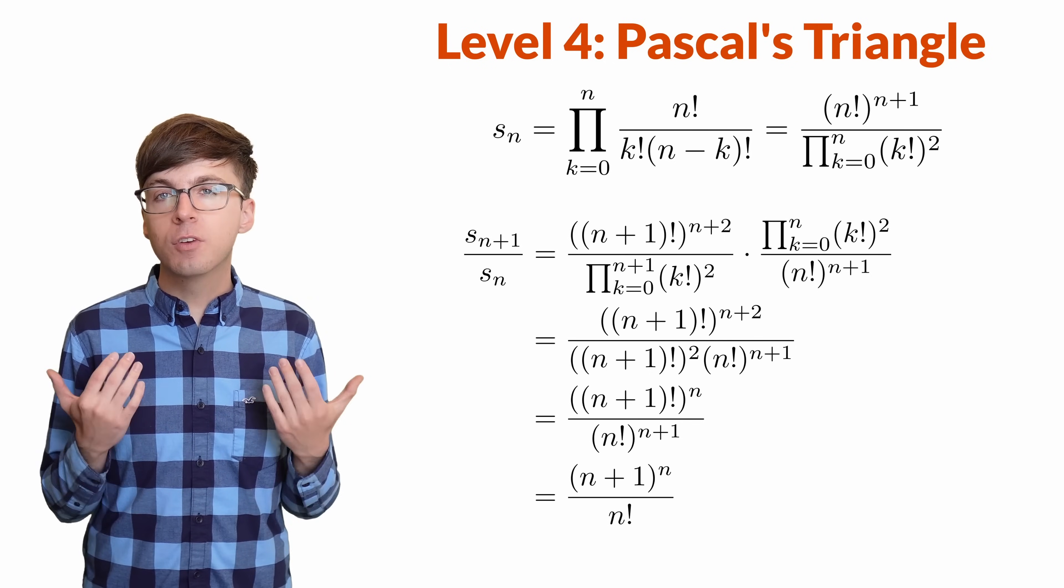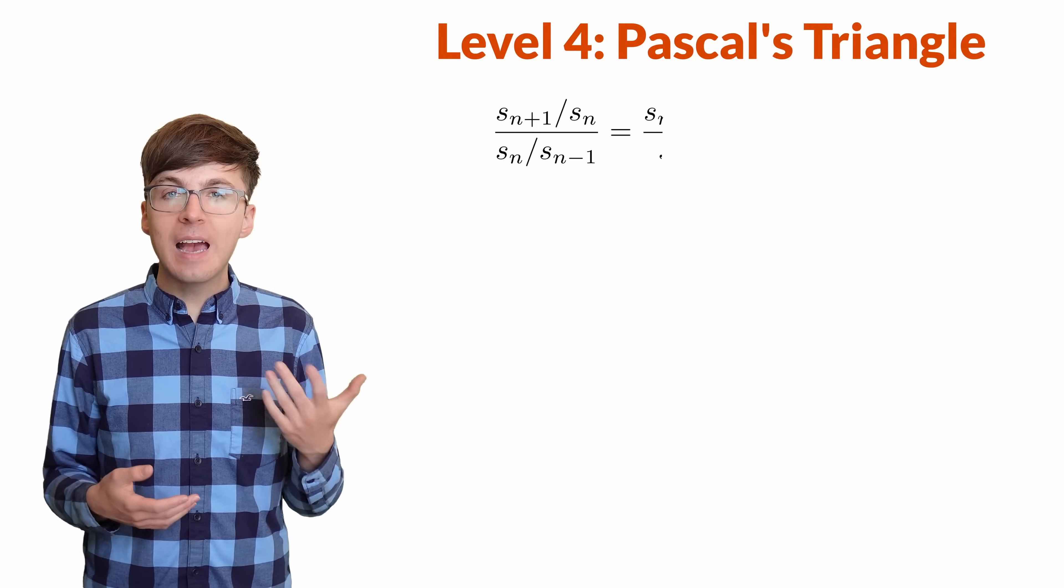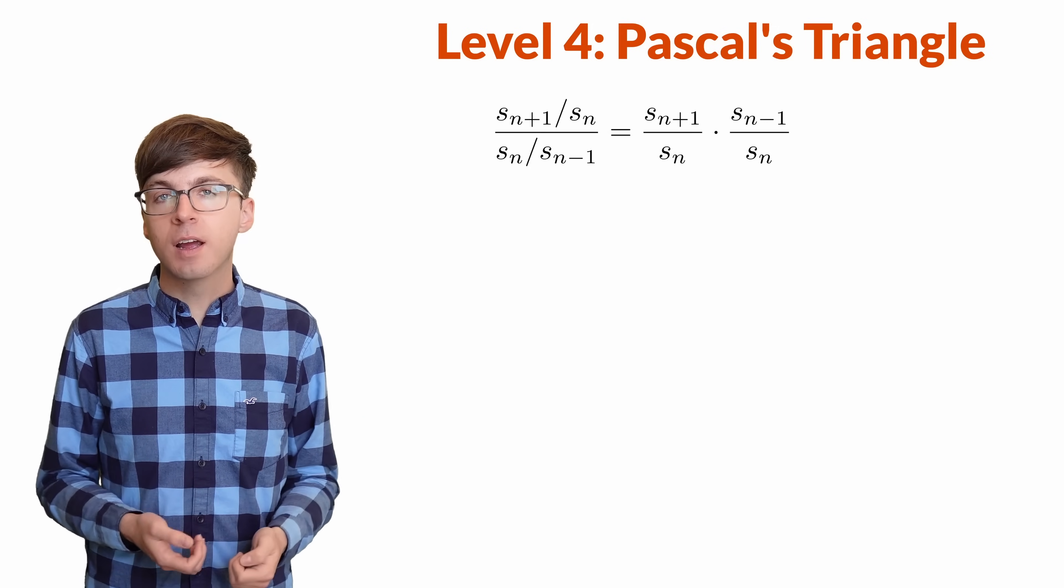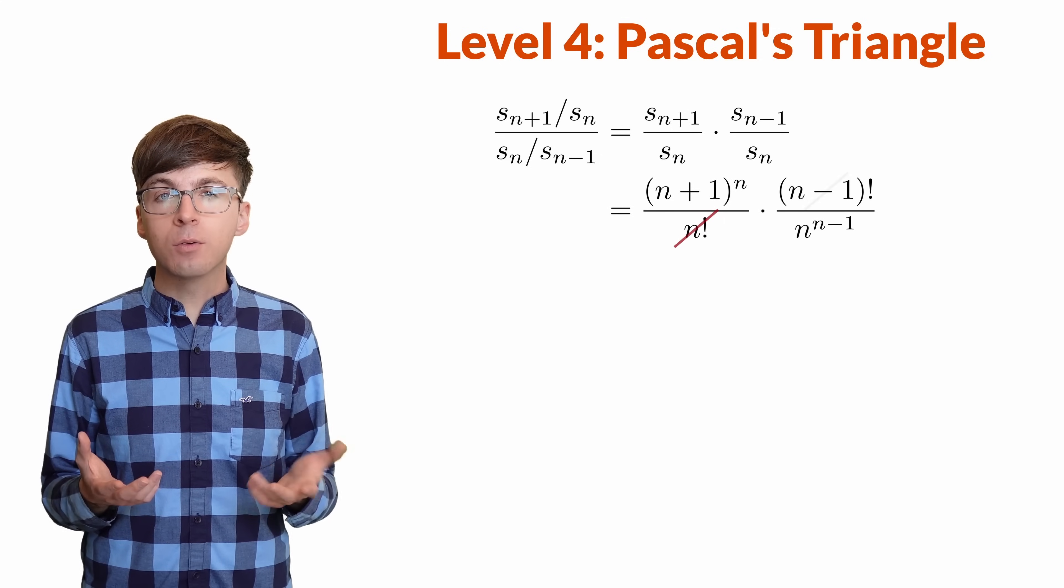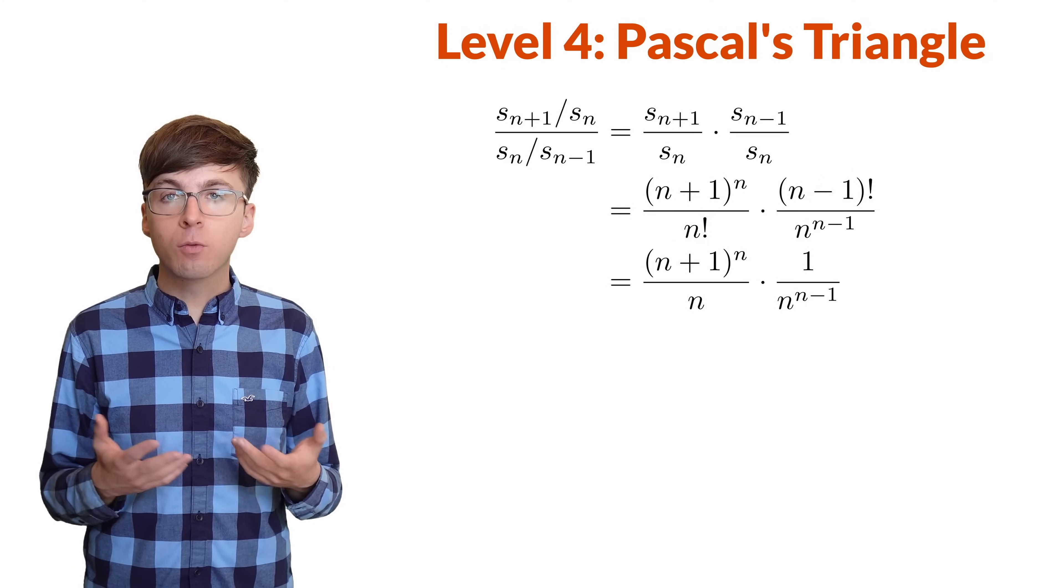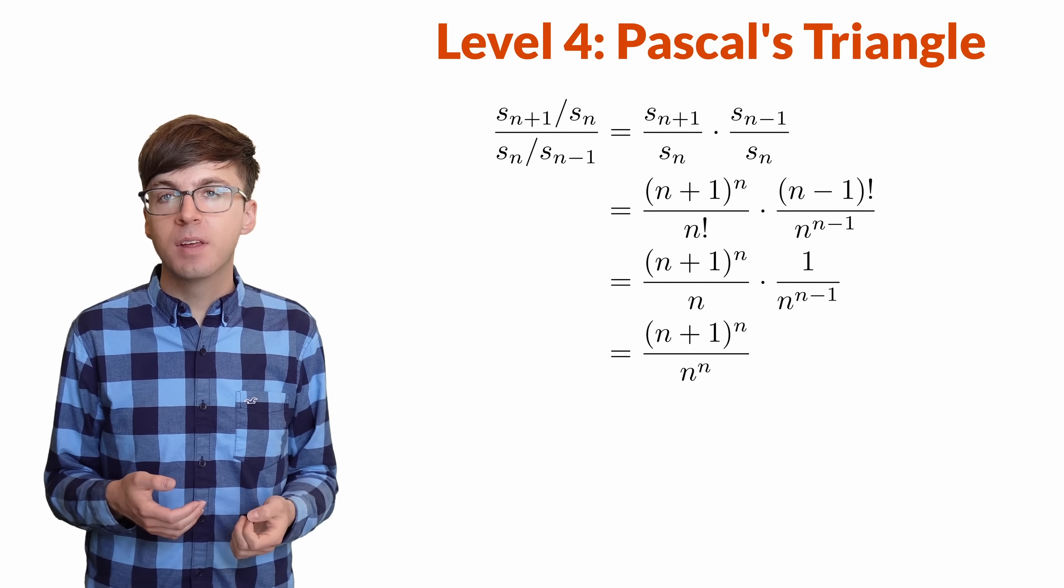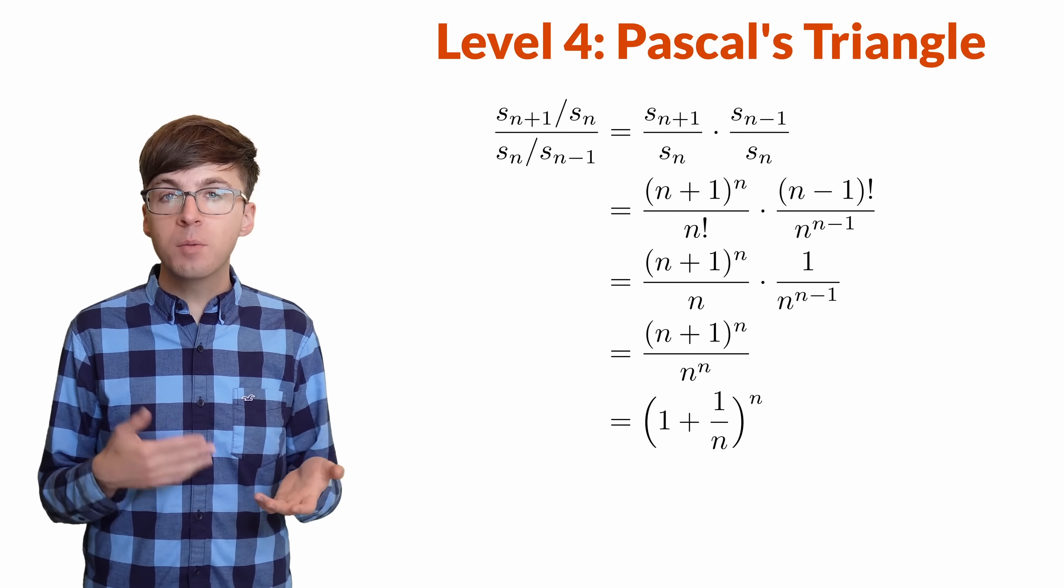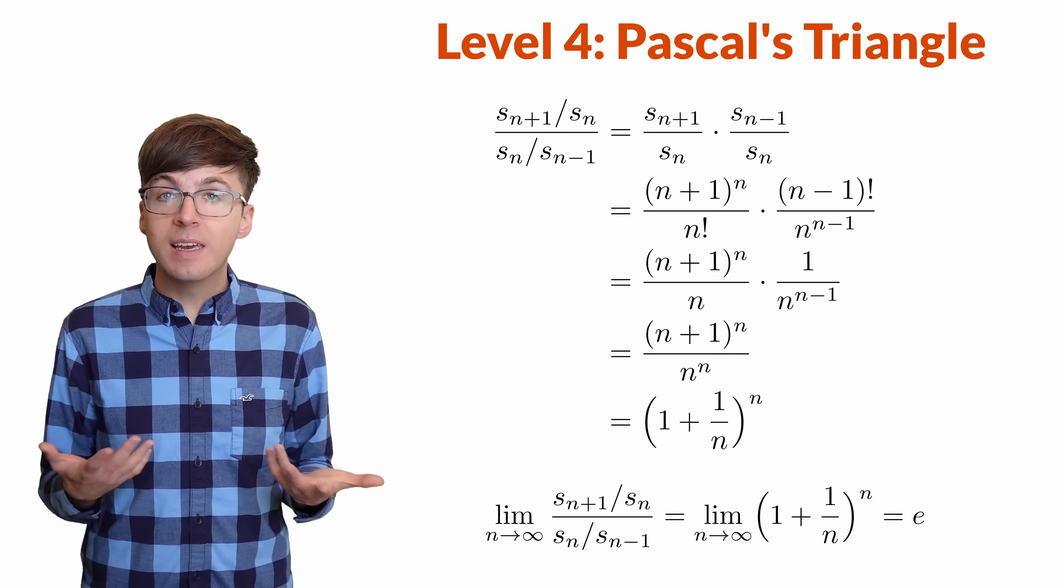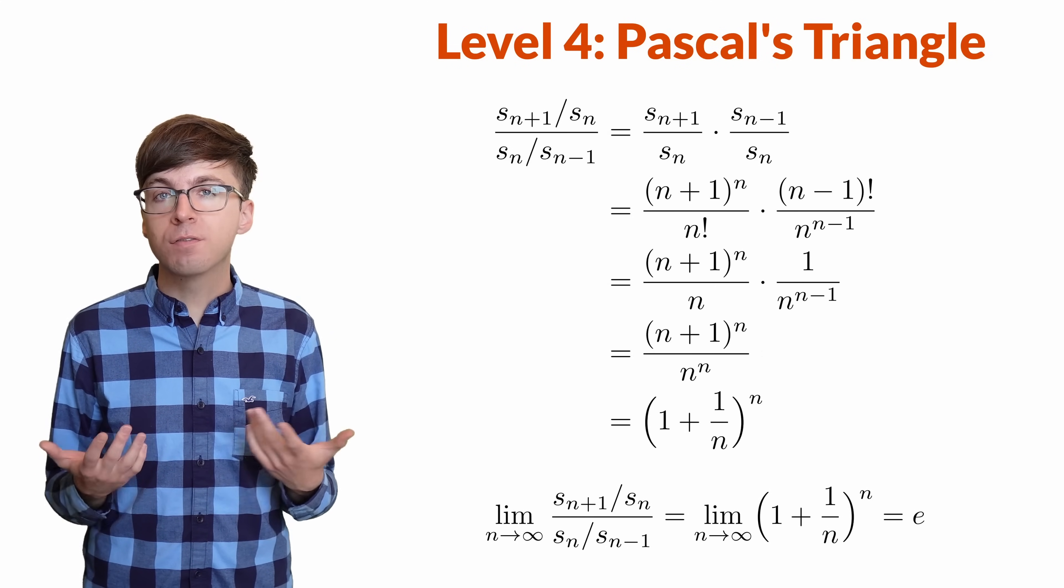To get e, there's just one more step. Let's take the ratios of these ratios. This will be Sn plus 1 over Sn divided by Sn over Sn minus 1. The factorials cancel out, leaving just n in the denominator. We can combine this with the rest of the n's to get n plus 1 to the n over n to the n. Then rewriting this, we get 1 plus 1 over n to the n. What happens as n goes to infinity? We get e. This is the exact same limit form of e we saw from compound interest.